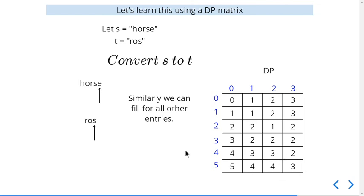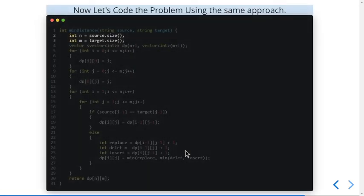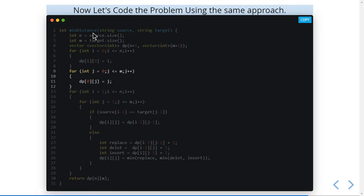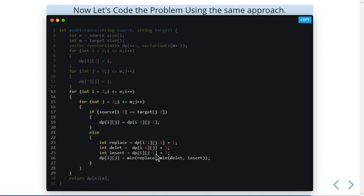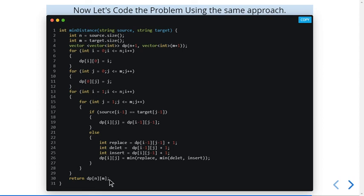This is how the DP table is filled in this problem. In the code, we take the sizes of the source and target strings, create a DP matrix of size (n+1) x (m+1), and initialize the base cases for the 0th row and 0th column. Then, if source and target characters are equal, we copy the previous diagonal value. Otherwise, we compute the minimum of the three operations.